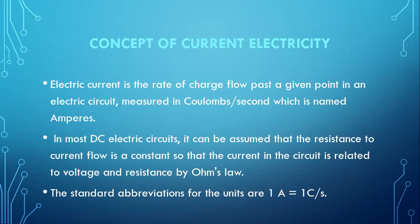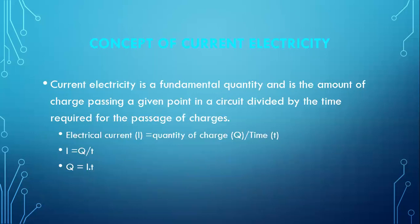The standard abbreviations for the units: one ampere equals one coulomb per second, 1 A = 1C/s. Current electricity is a fundamental quantity and is the amount of charge passing a given point in the circuit divided by the time required.